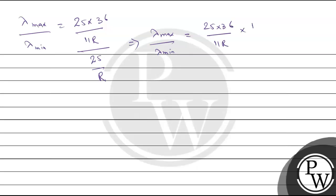When we calculate λmax/λmin = [25 × 36/(11R)] ÷ [25/R], the 25 and R cancel out. So the ratio = 36/11. Therefore the ratio of λmax to λmin in the Pfund series is 36/11.